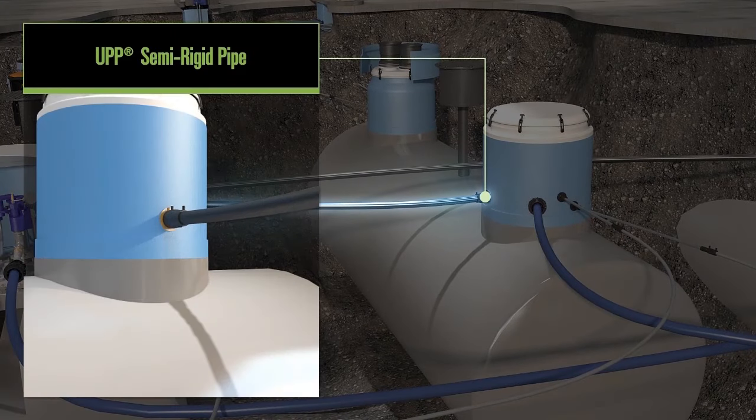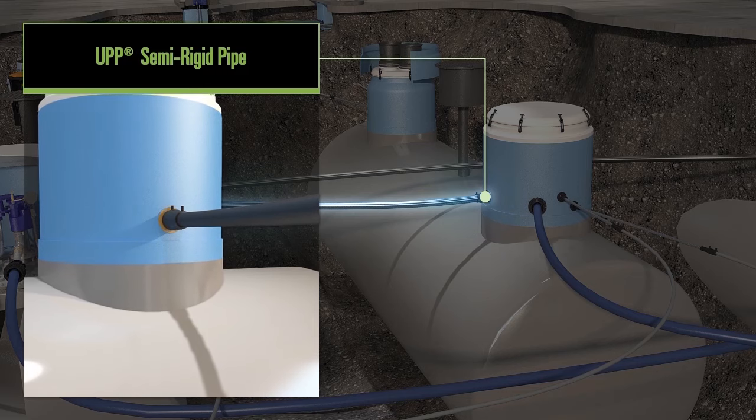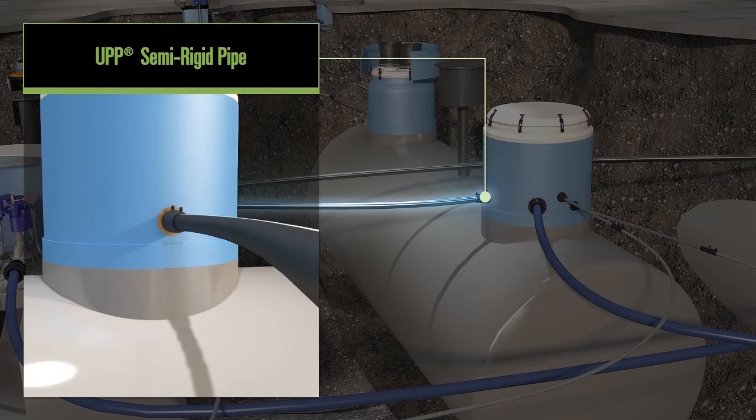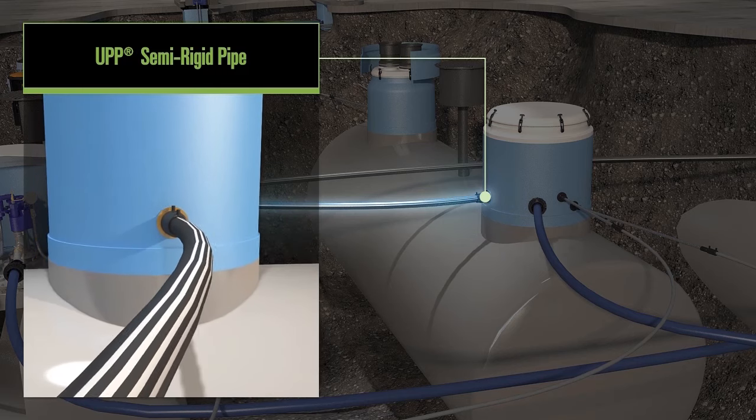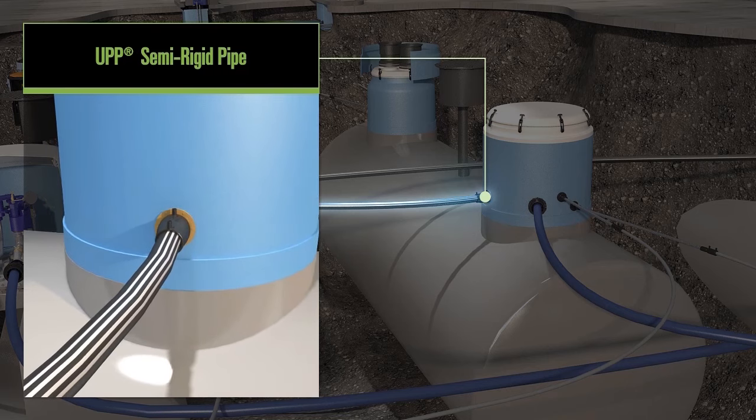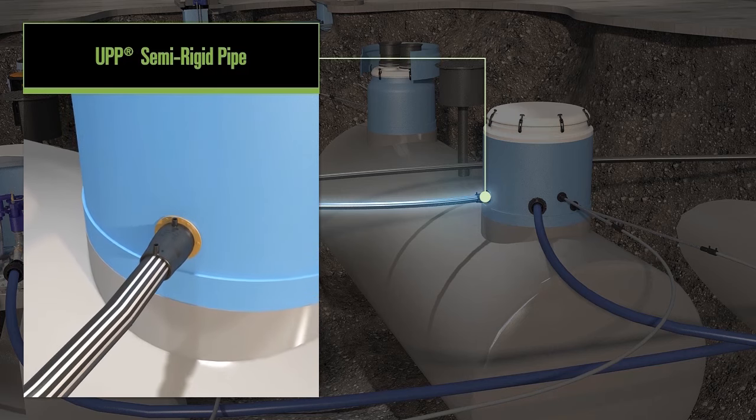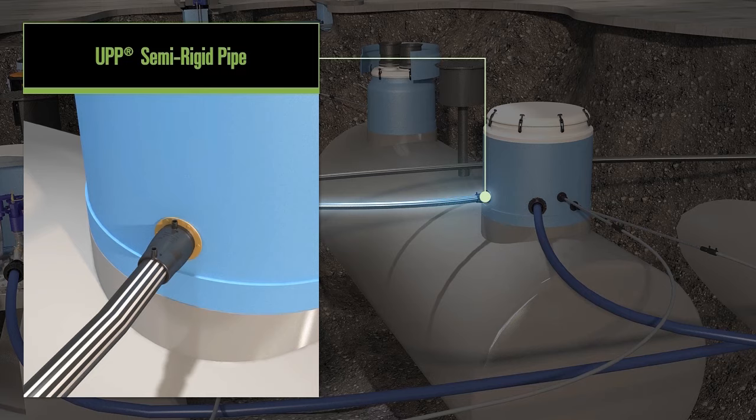Our UPP brand semi-rigid pipework system is stiffer but utilizes electrofusion welding technology to create seamless joints. Essentially, the electrofusion welding process introduces a controlled amount of heat to join pipe and fittings together to create one cohesive and watertight system to transport fuel or vapor.